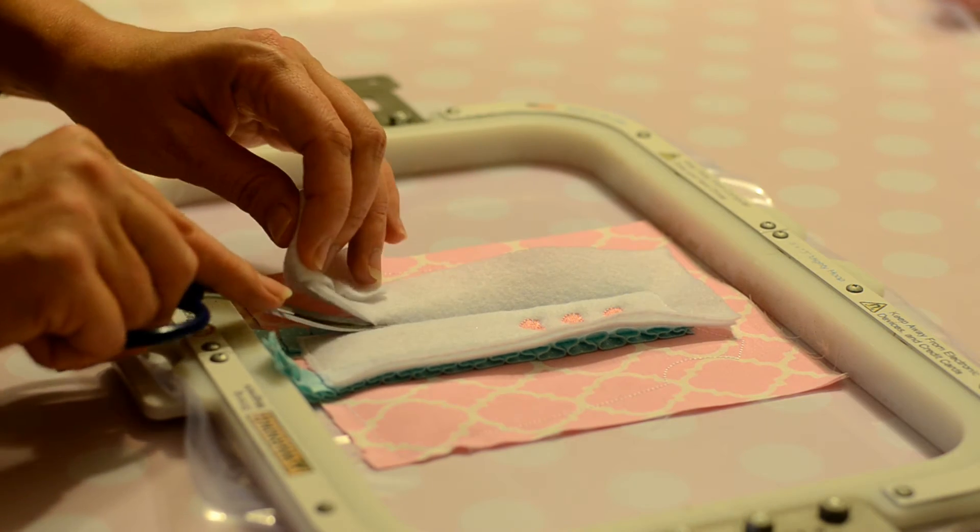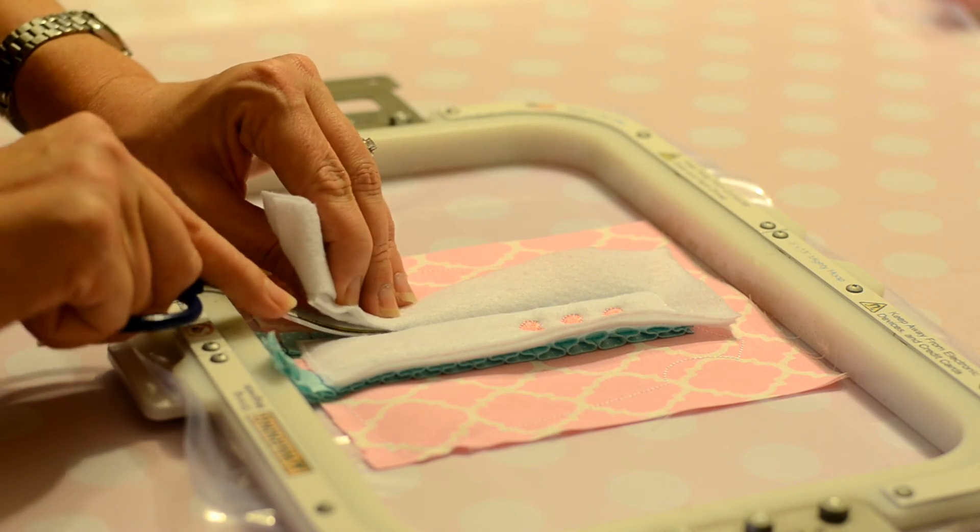Trim away excess felt from around the tack lines. Be careful not to cut the ruffles underneath.